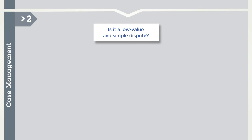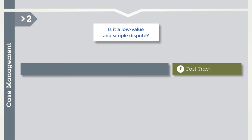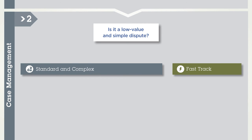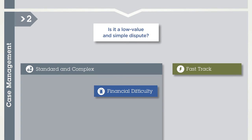We have created two distinct streams ensuring disputes are considered efficiently and effectively. These streams are fast-track and standard and complex. Within standard and complex, we have a customised process for financial difficulty disputes.